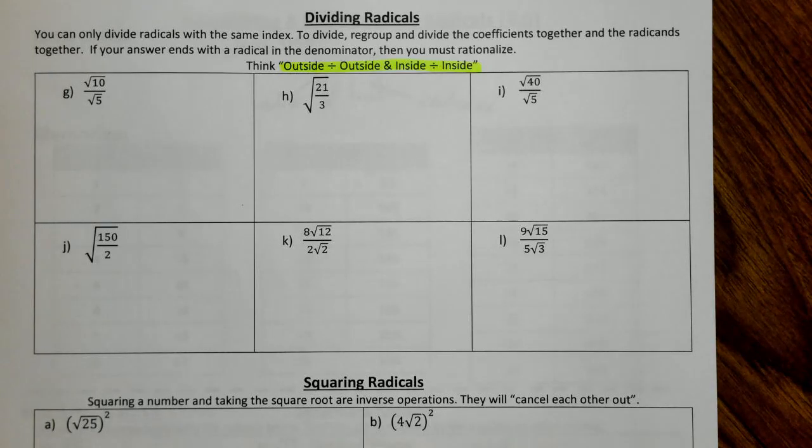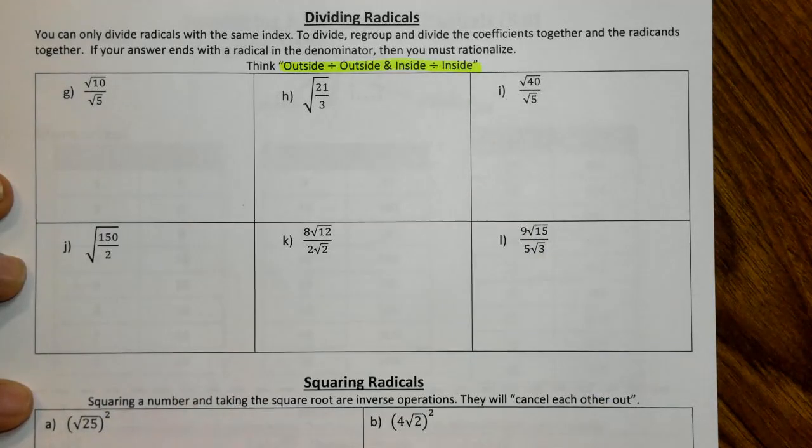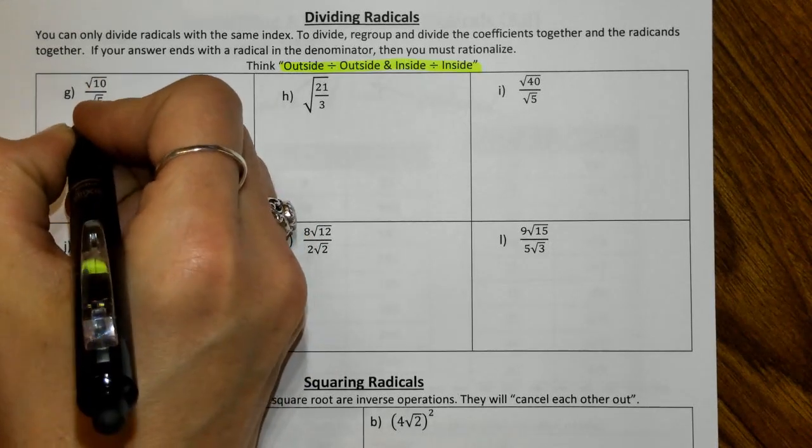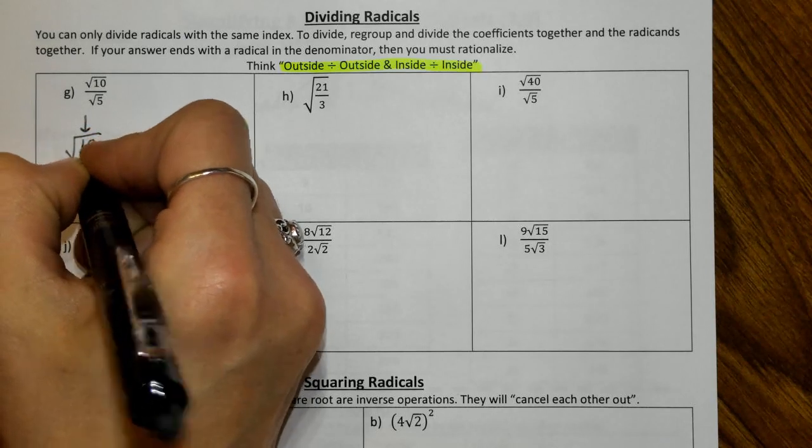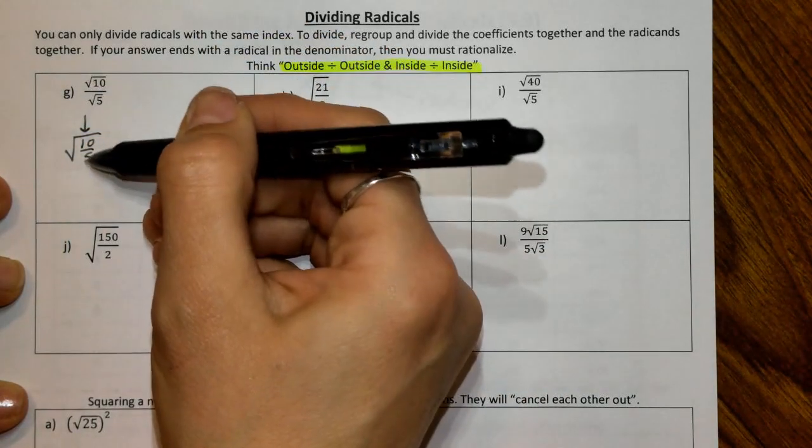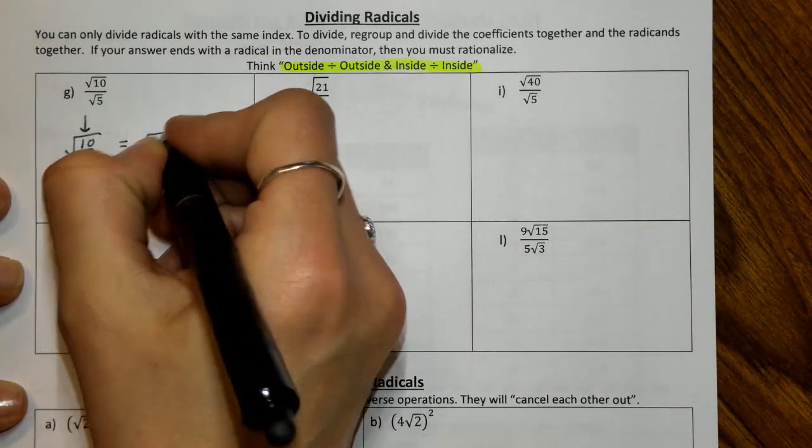What I want to show you here is these first two can take on two different forms. This right here, the square root of 10 over the square root of 5, you can also see as the square root of 10 over 5, like this. And that's why we're dividing the inside with inside. And so this will become the square root of 2.